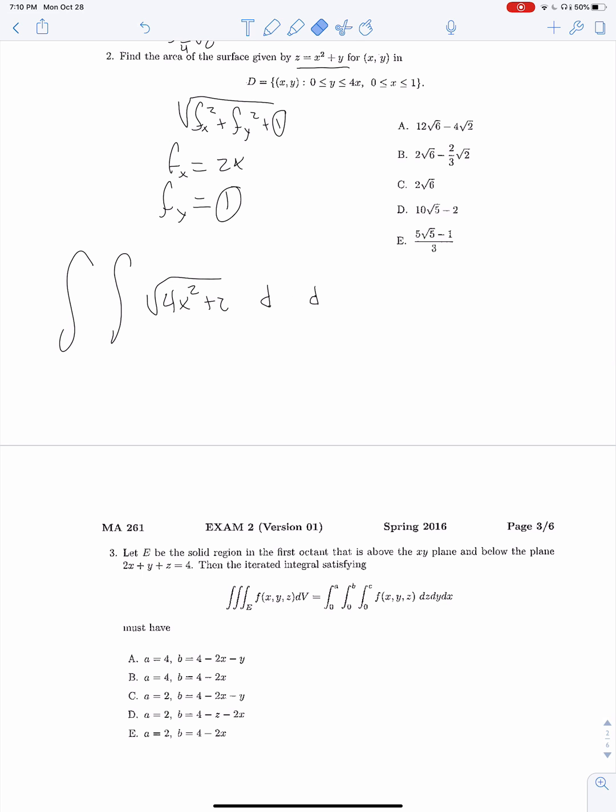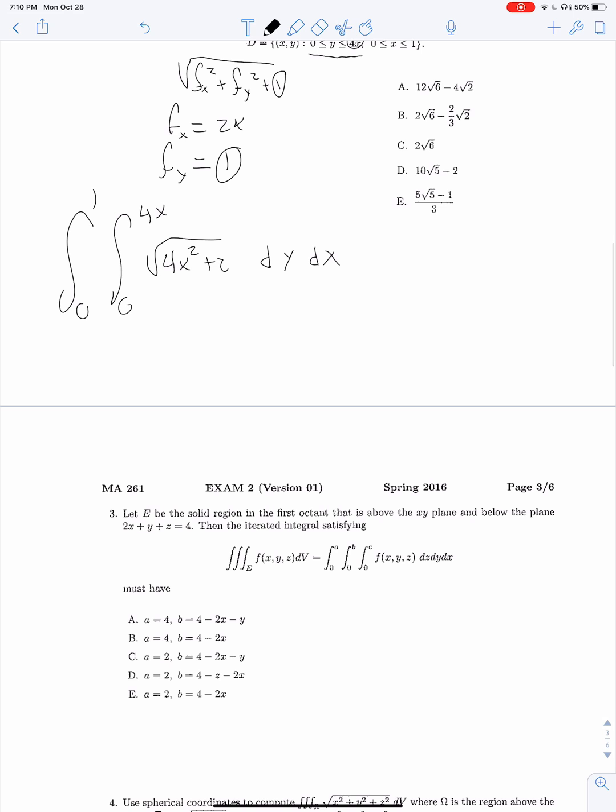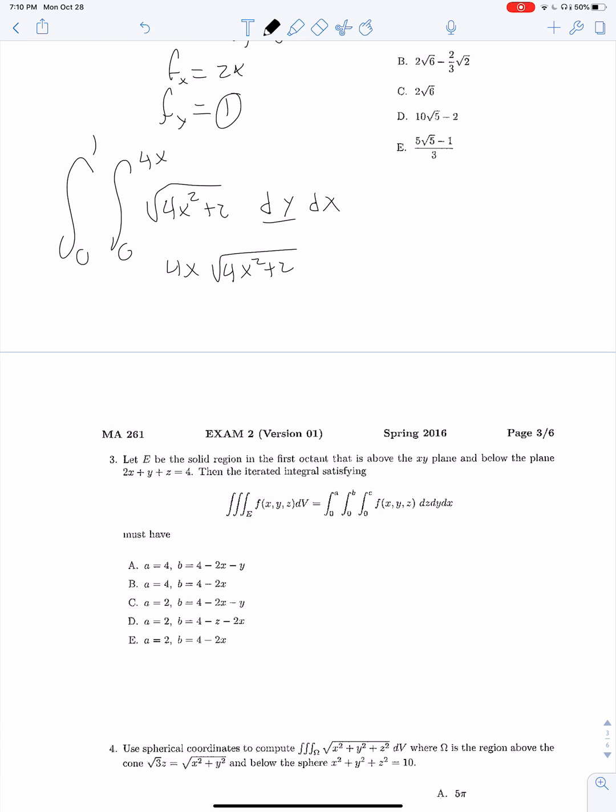We're going to have our integral with 4x squared plus 2 inside the square root. dy dx, because we're given bounds for y in terms of x. So 0 to 4x for y, and 0 to 1 for x. Integrating with respect to y, we get 4x root 4x squared plus 2.